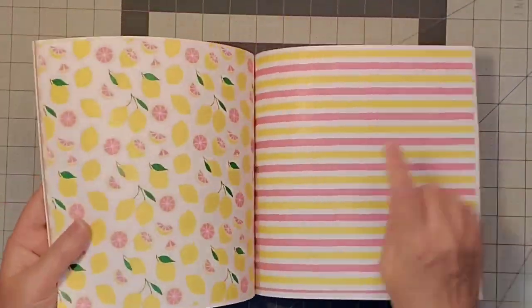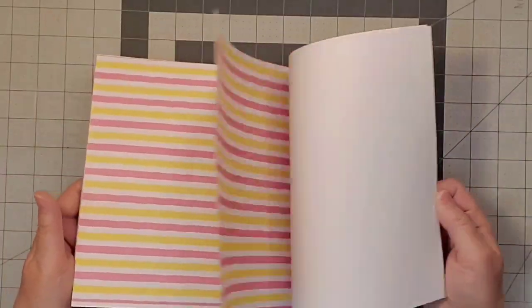Just like in Part 1, I'm going to be using this Lemon and Pink Patterns Scrapbook Paper. I ordered it from Amazon.